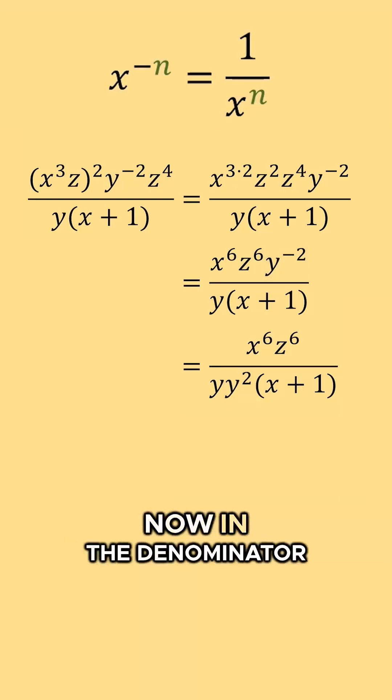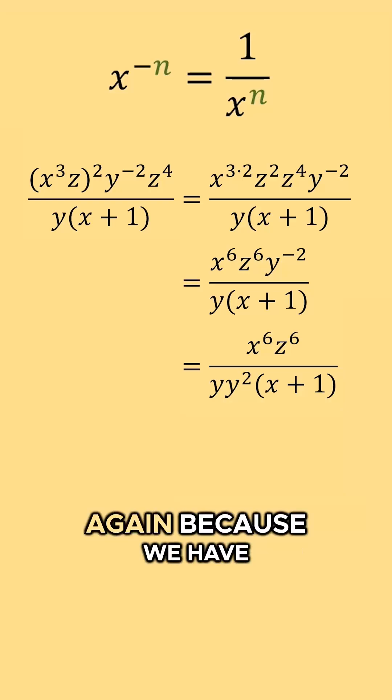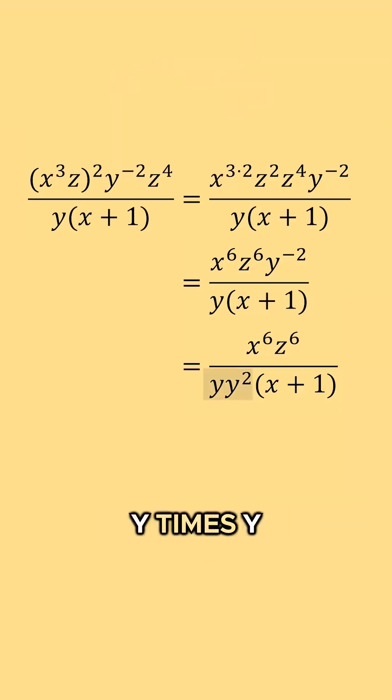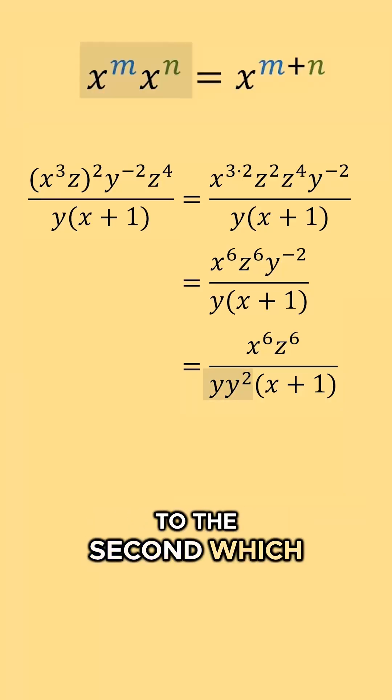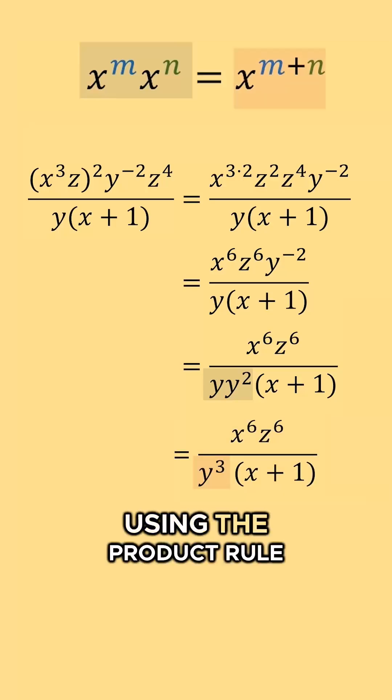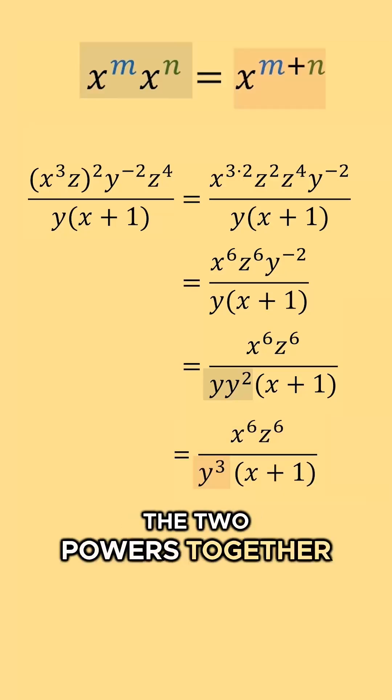And it looks like now in the denominator we have to use the product rule again, because we have y times y to the second, which is going to be equal to y to the third power using the product rule. We just add the two powers together.